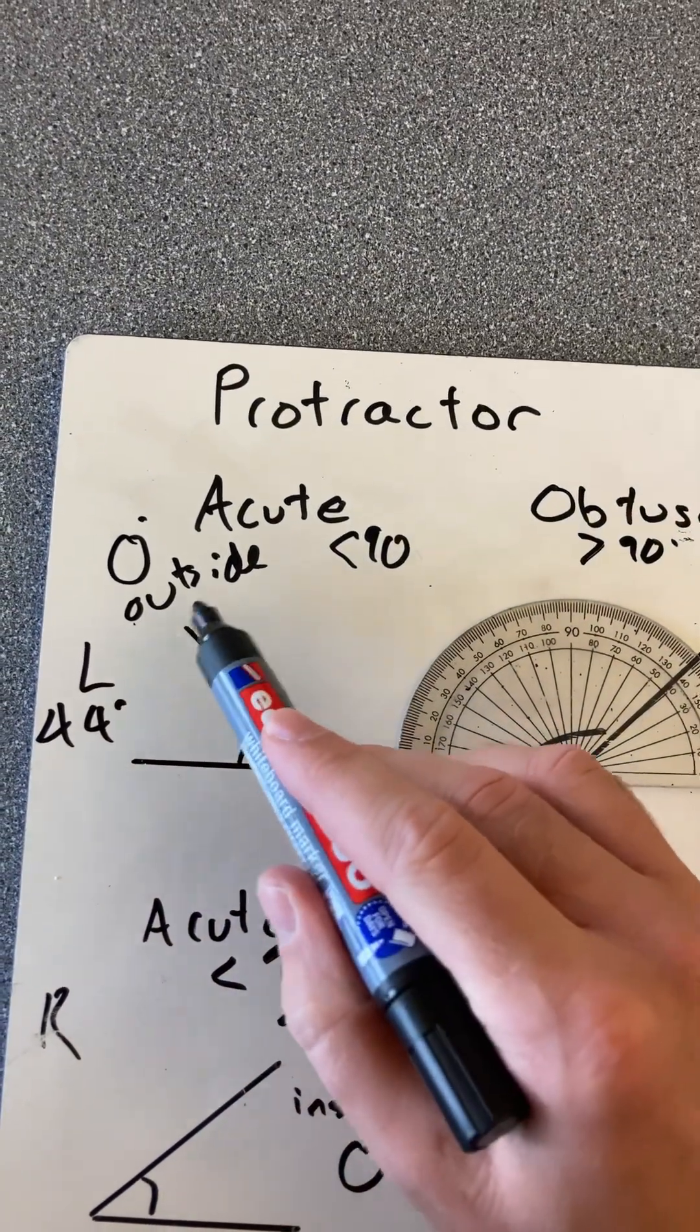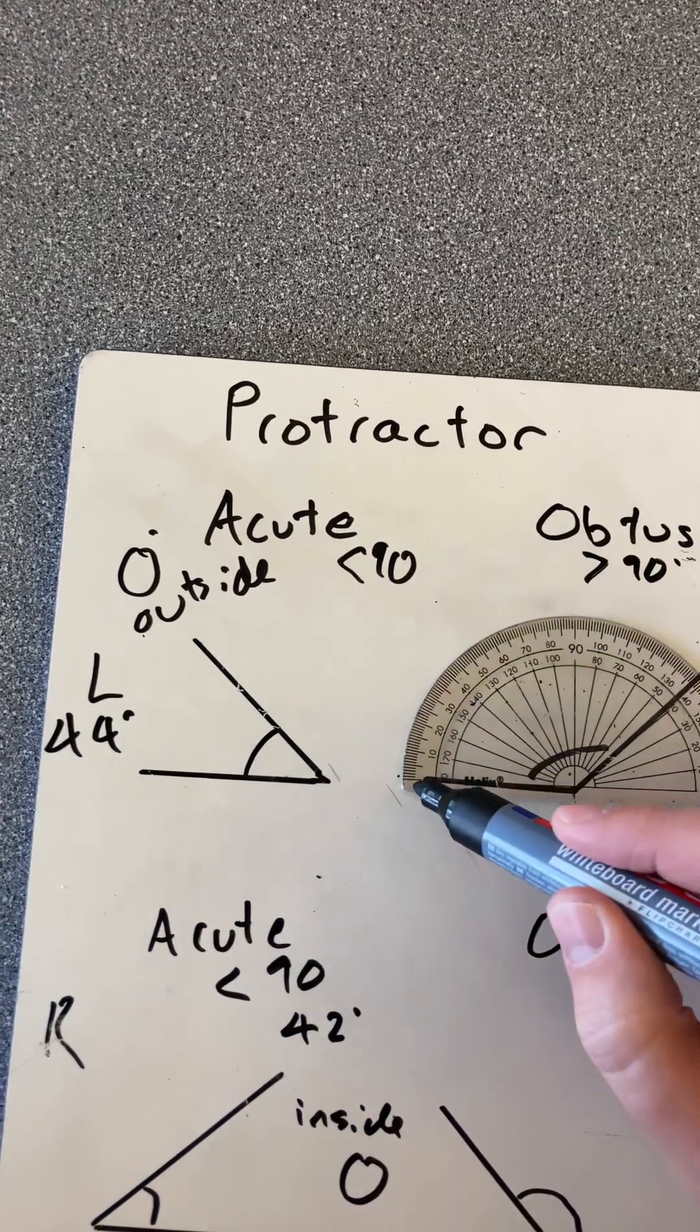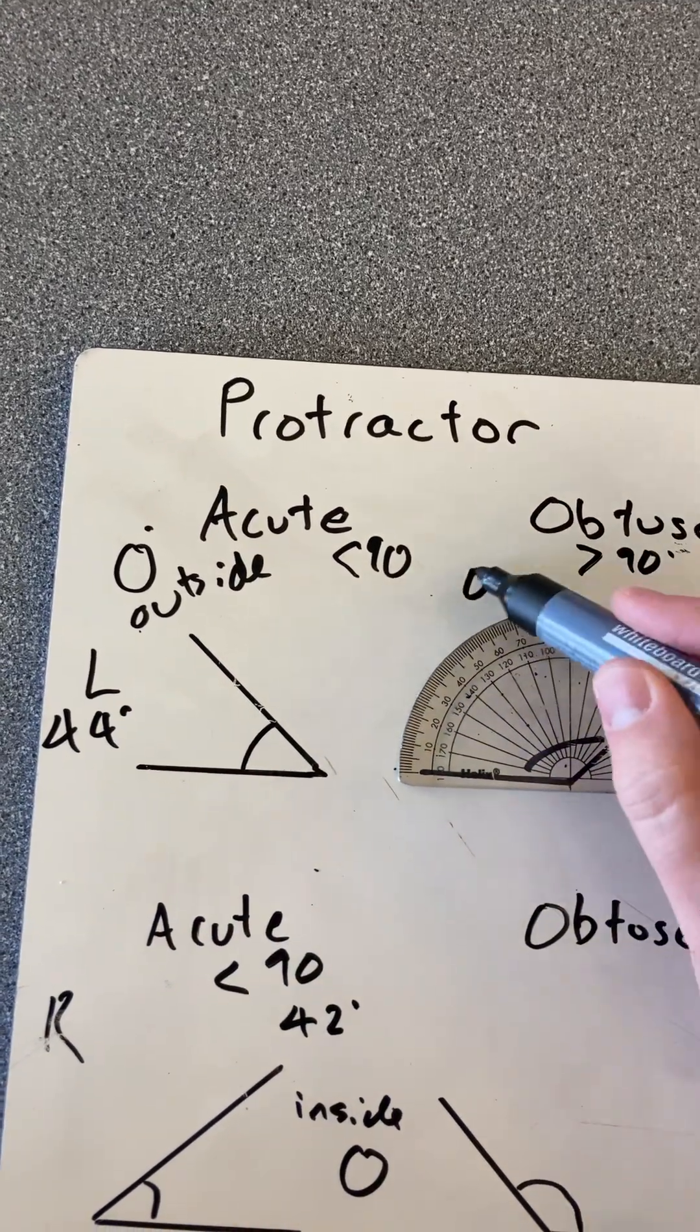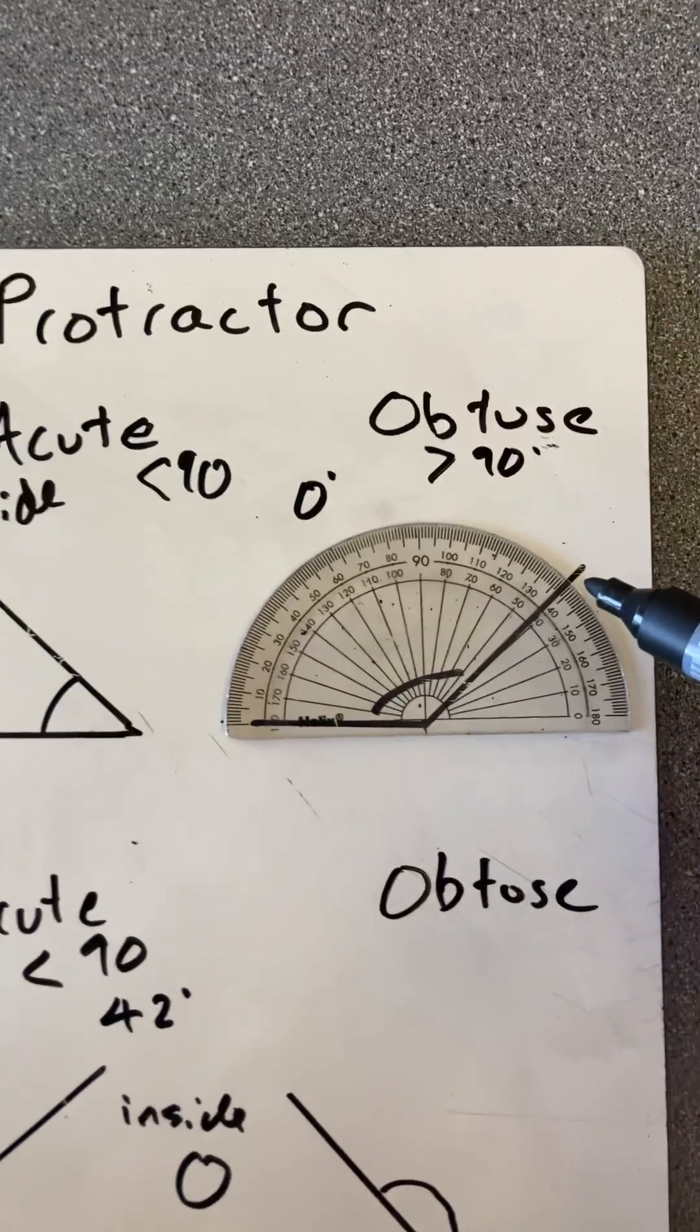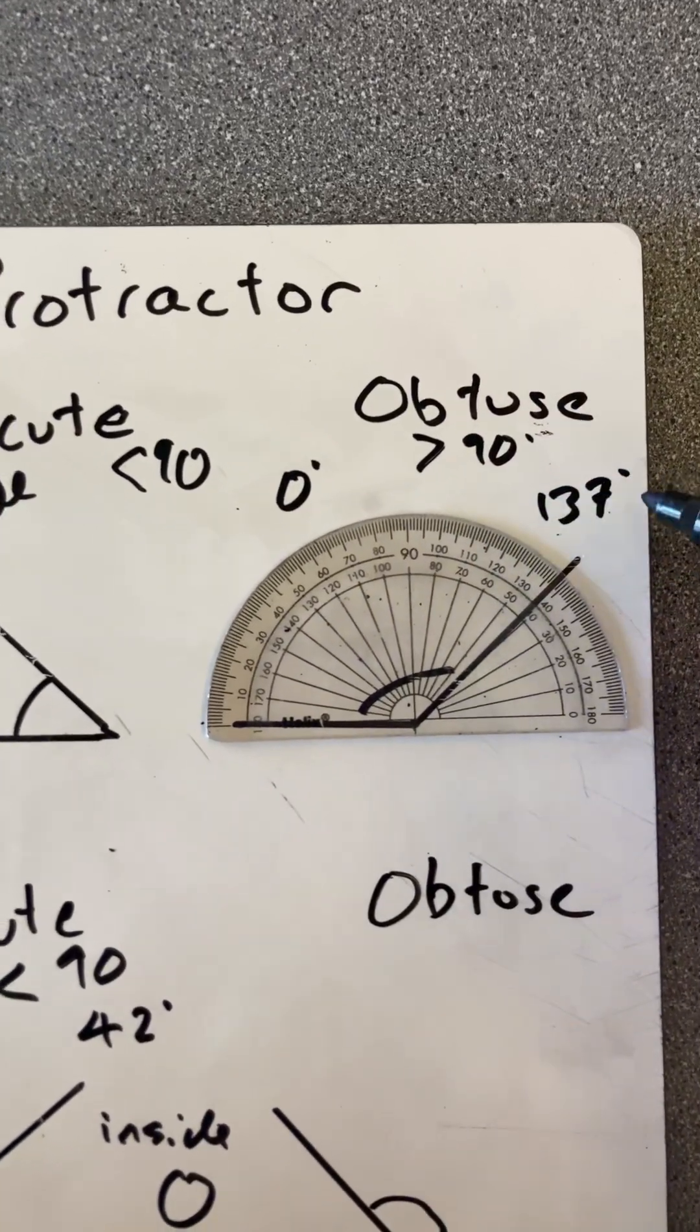Reading from the left, i.e. the outside, from zero all the way up to 137 degrees.